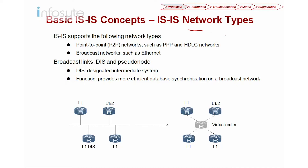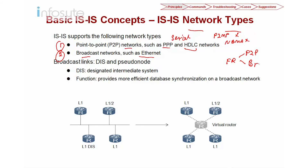Next we look into network types. In ISIS, there are only two types: point-to-point and broadcast network. Point-to-point runs on PPP and HDLC — if you use a serial link it defaults to point-to-point. If an Ethernet network is detected, it uses the broadcast network. Unlike OSPF, ISIS does not have point-to-multipoint or NBMA. So for frame relay, you only have two choices: configure it as point-to-point or as broadcast. Point-to-point is the recommended configuration for frame relay.